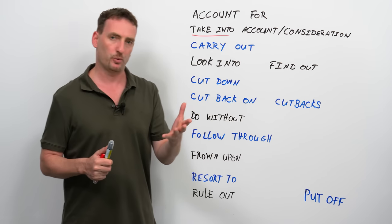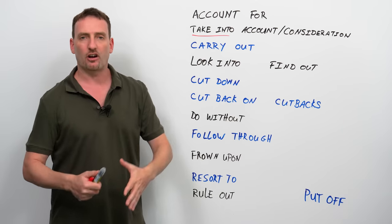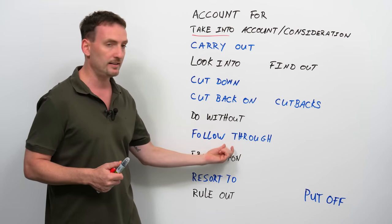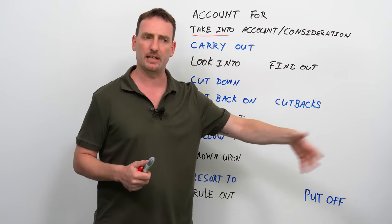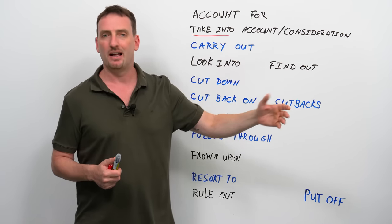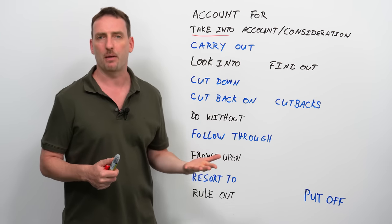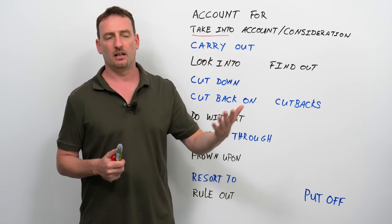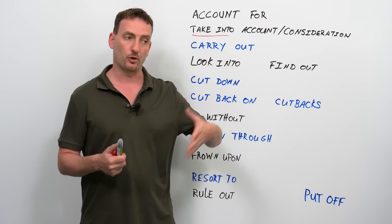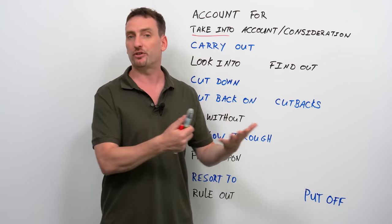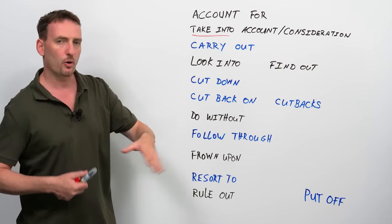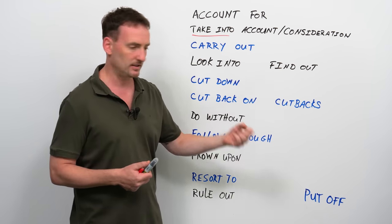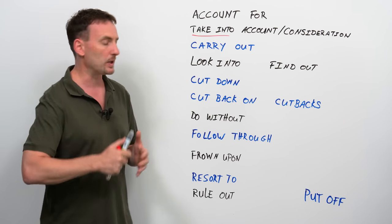Follow through has a couple of meanings. One is to complete. If I started a project, I will follow it through to the end. And notice I say, follow it through to the end means I will continue until it's finished. Follow through can also mean to keep a promise. So, if I promised my friend that I will help him move this weekend, then I have to follow through on that promise. I have to go and actually help him move to his new apartment. So, keep a promise or complete a task. Follow through on a project, follow through on one's plans, follow through on a promise. Notice the collocations there.